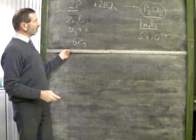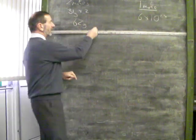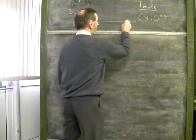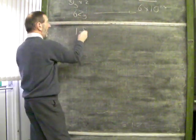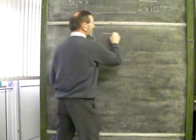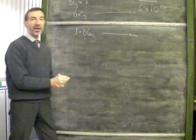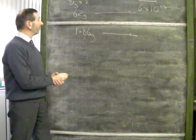So 62 grams will give this number of molecules. We're asked to work out how many molecules do we produce starting with just 1.86 grams of phosphorus.